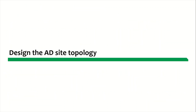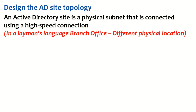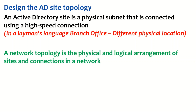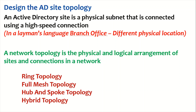Next, designing Active Directory site topology. An Active Directory site is a physical subnet connected using a high-speed connection — in layman's terms, it's simply a branch office at a different location. The network topology is the physical and logical arrangement of sites and connections. We can configure site topology using various types: ring topology, mesh, hub-and-spoke, or hybrid. We'll discuss this in detail in our Active Directory Sites and Services video.